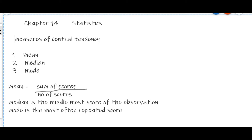You have also learned measures of central tendency like mean, median, and mode. We know that mean is nothing but sum of scores divided by number of scores. Median is the middlemost score of the observation when arranged in ascending order, and mode is the most often repeated score. In this video we are going to learn how to find out mean for ungrouped data as well as grouped data.